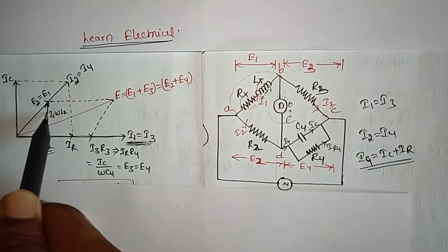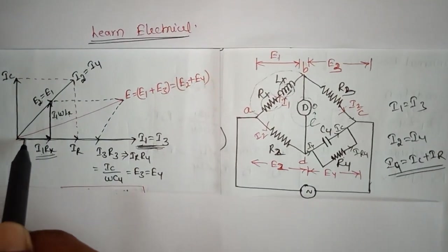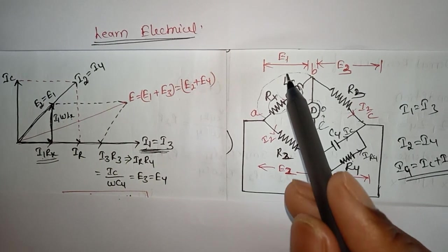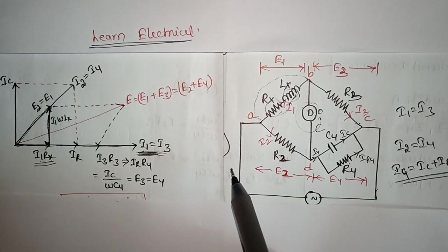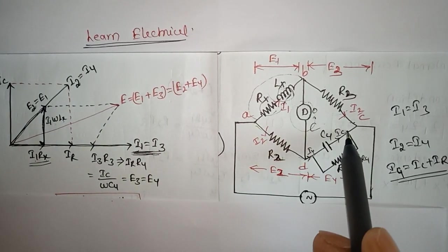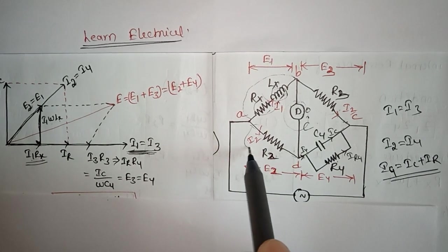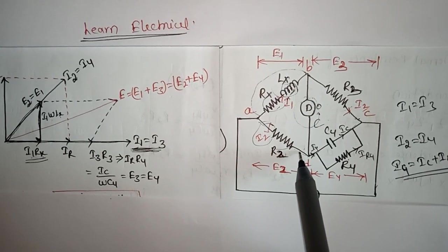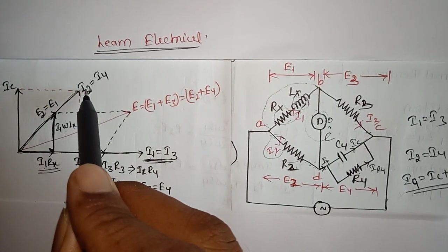We add the inductive drop I1·ωLx (leading 90° from I1) to the resistance drop I1·Rx to get the vector E1. At balance E1 = E2, so we take E1 = E2. Since arm two has only resistance, current I2 is in phase with E2. And since I2 = I4, we represent I2 = I4 accordingly.